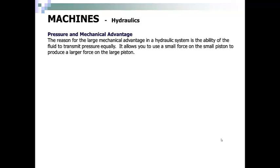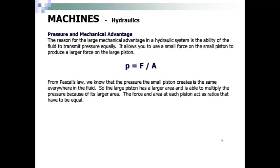Pressure and mechanical advantage. The reason for the large mechanical advantage in a hydraulic system is the ability of the fluid to transmit pressure equally. It allows you to use a small force on the small piston to produce a larger force on the large piston. Pressure is equal to force divided by area. From Pascal's law, we know that the pressure the small piston creates is the same everywhere in the fluid. So the large piston has a greater area and is able to multiply the pressure because of its larger area. The force and area at each piston act as ratios that have to be equal. So the force of the small piston divided by the area of the small piston equals the force of the large piston divided by the area of the large piston.